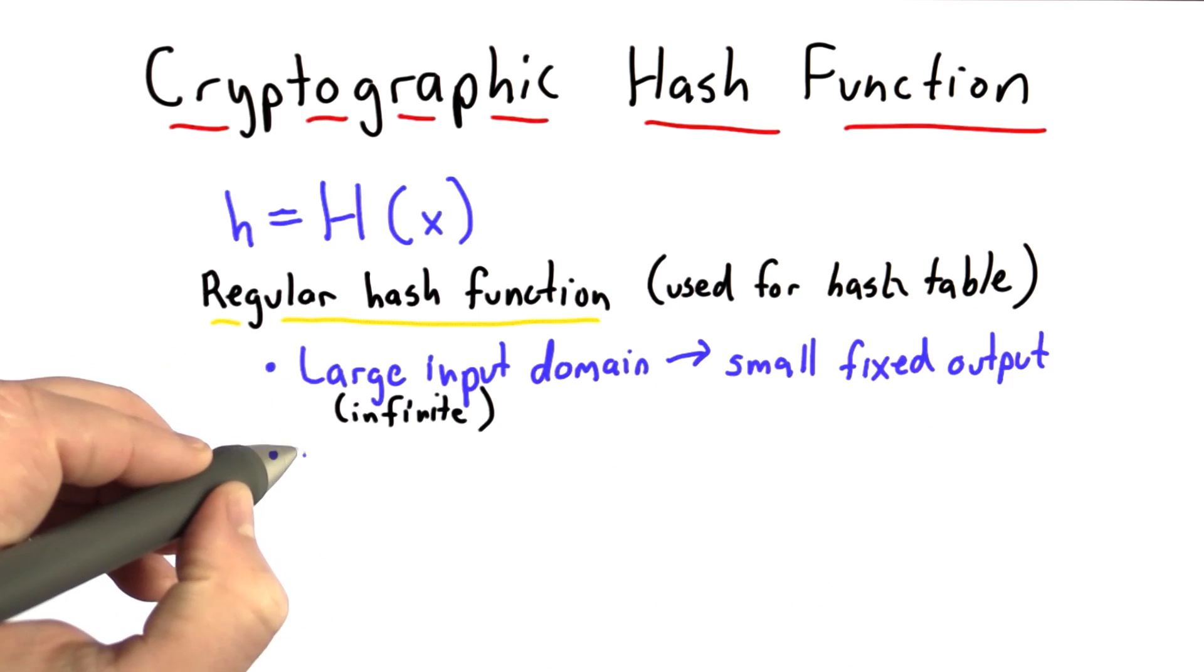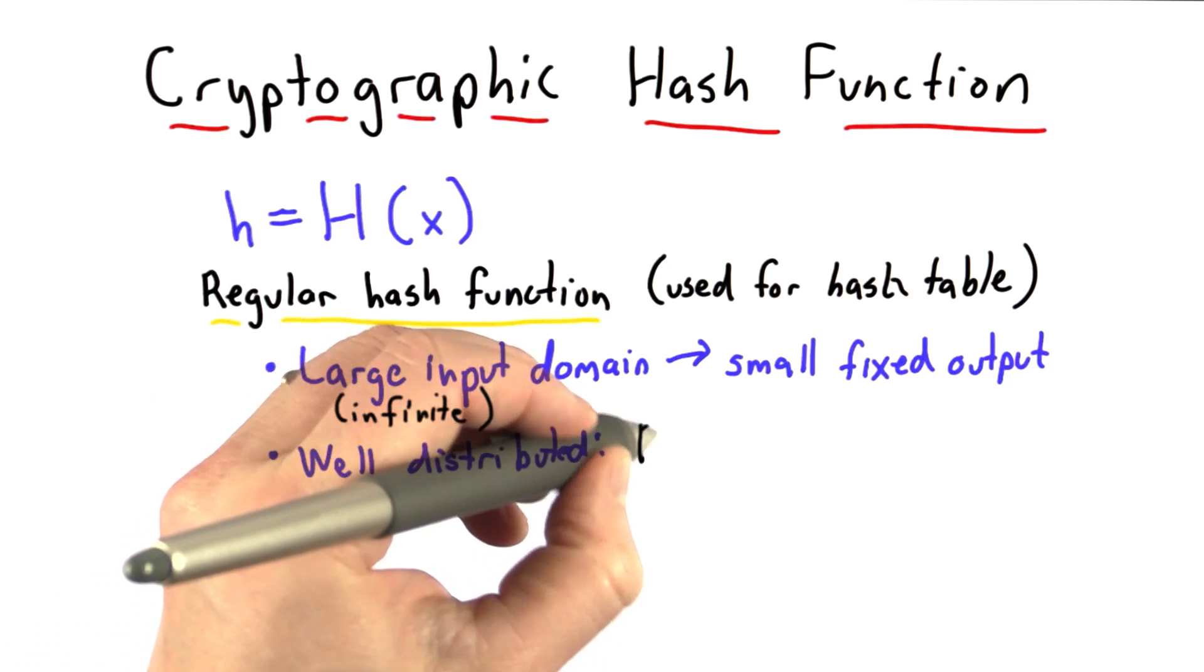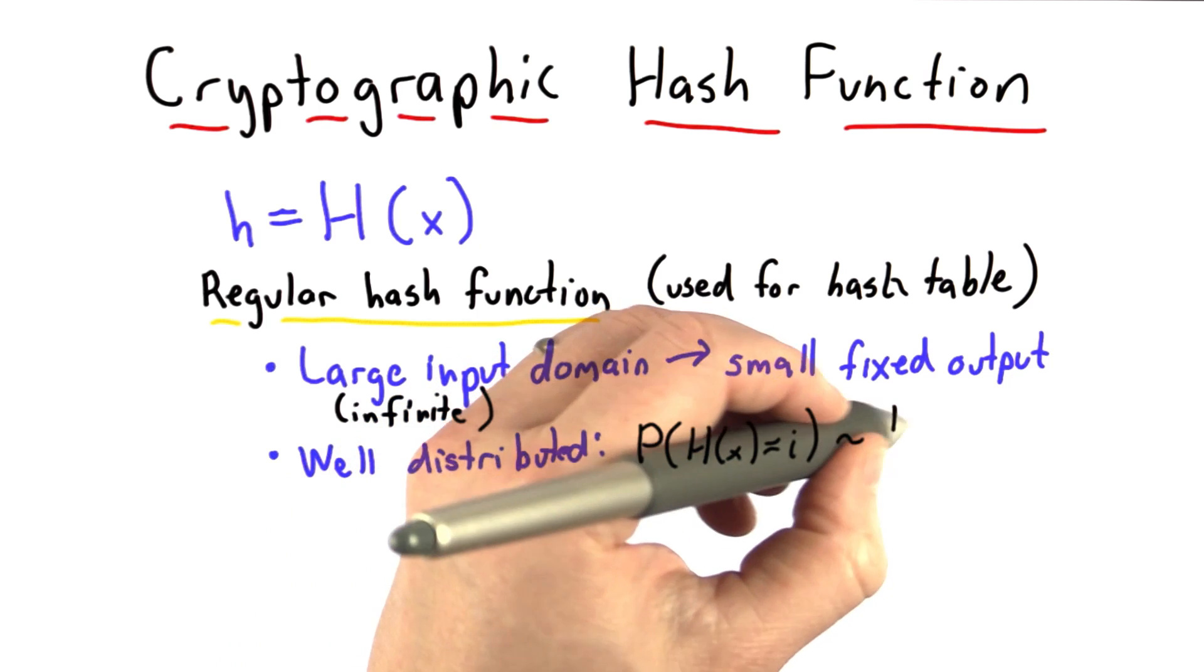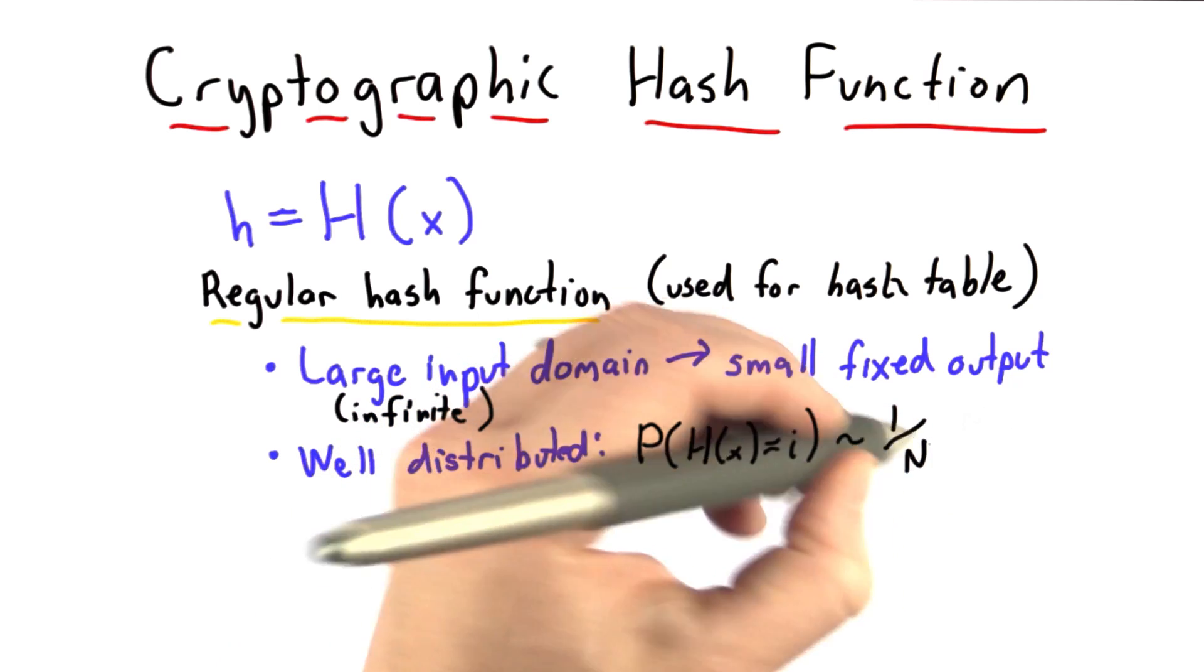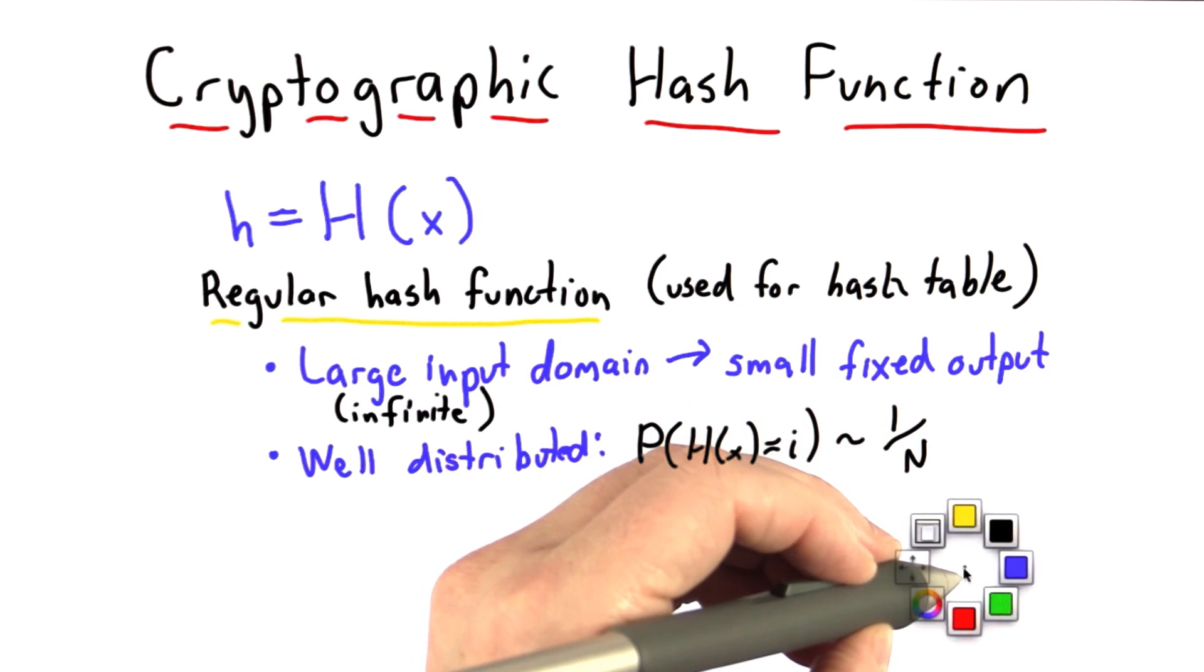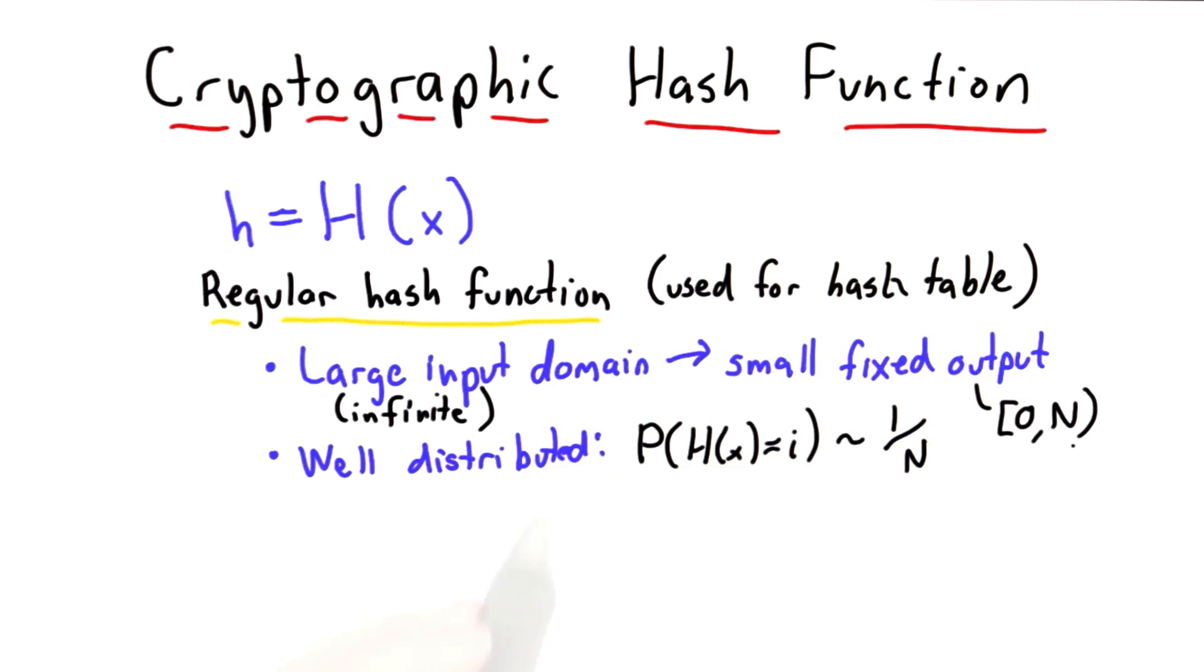It should also have the property that it's well distributed, that for any given input, the probability that that input maps to a particular value is close to 1 over the size of the table. And we'll use n to represent the output size. So we'll say that outputs are in the range from 0 up to n minus 1. And so if it has this well distributed property, well this works great for a hash table.